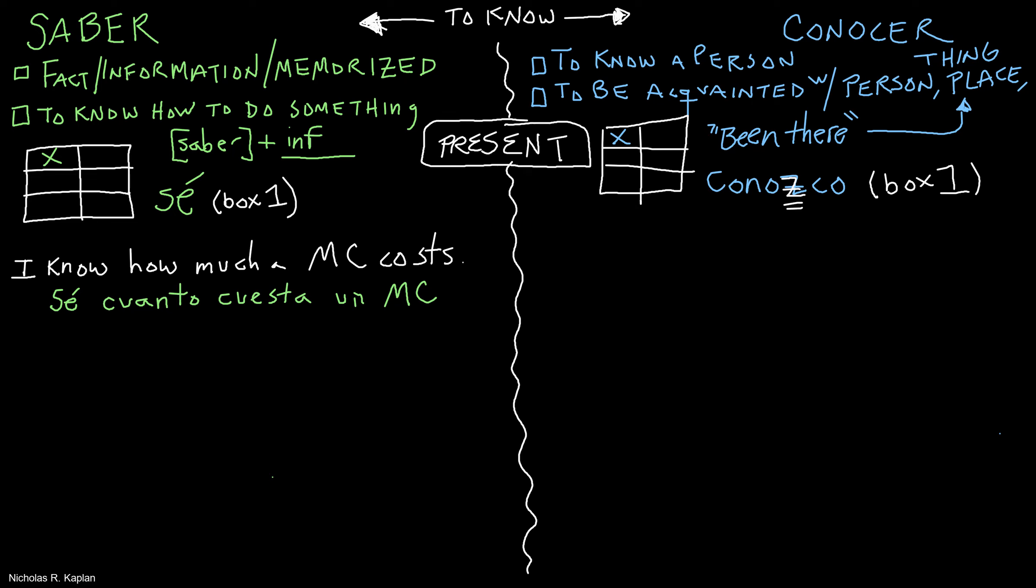Second example with saber: I know the conjugations of the irregular verbs. Sé las conjugaciones de los verbos irregulares. I know them. It's something memorized, a fact, information.